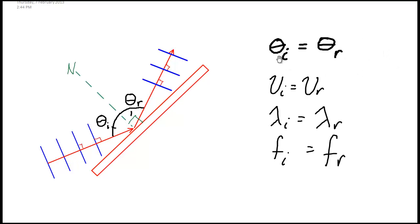Not only is the angle of incidence equal to the angle of reflection, our velocities are the same because we haven't changed the mediums, our wavelengths are the same, and our frequencies are the same.